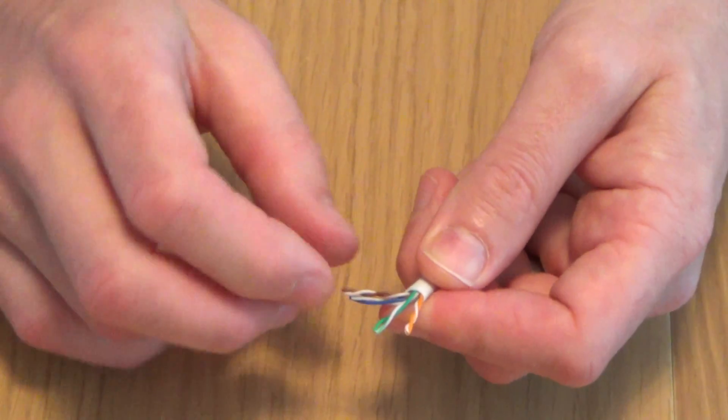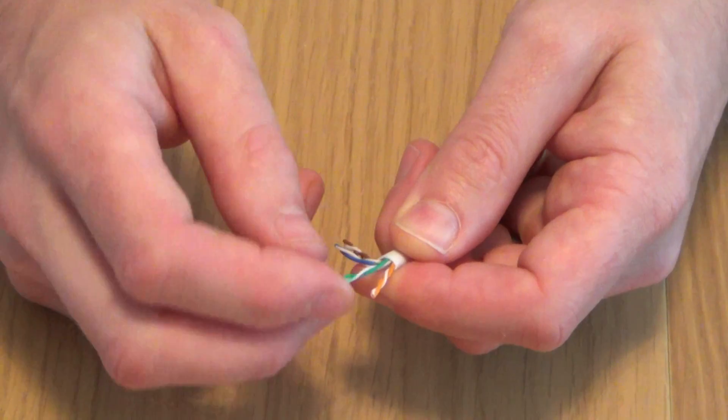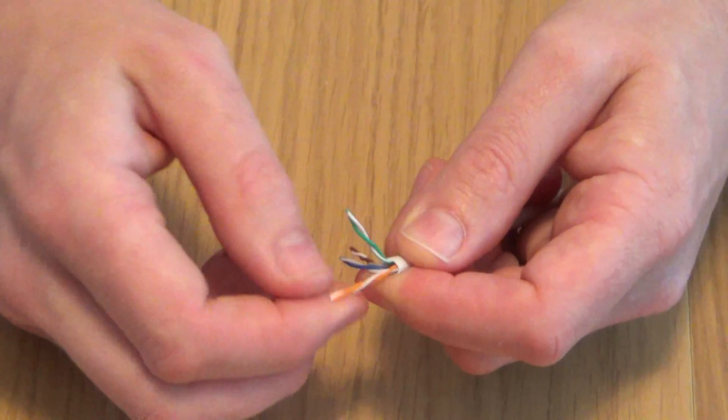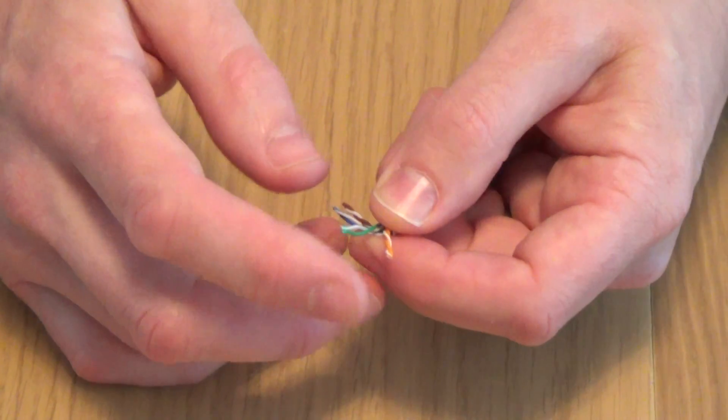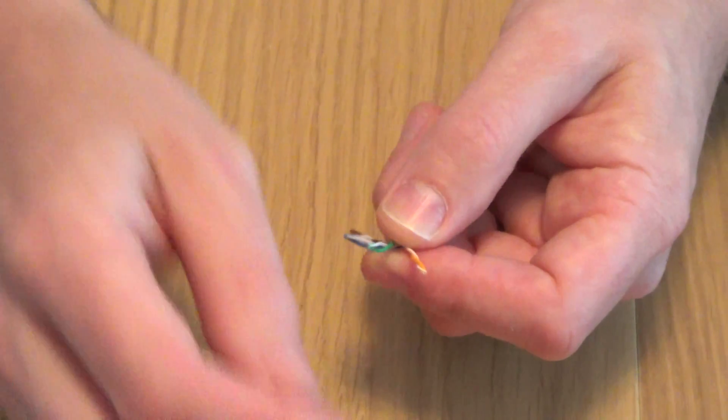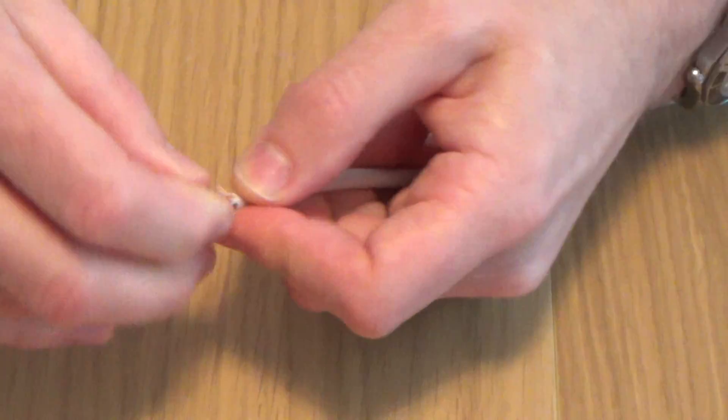The only difference is that the blue and the brown is always the same, but on A it starts with the green and on B it starts with the orange on pins one and two. If you want to do a crossover cable, you could do A on one side and B on the other side. But today I'm going to be doing it in the B configuration and that's the way that most things are done nowadays.